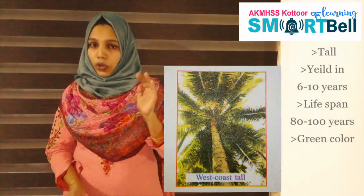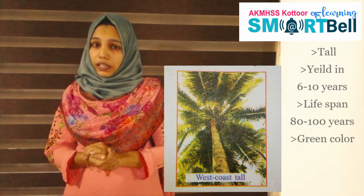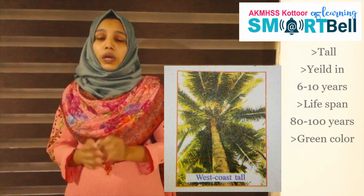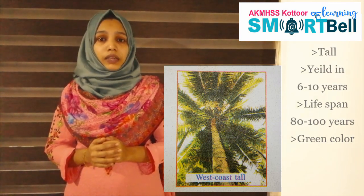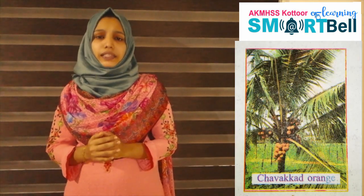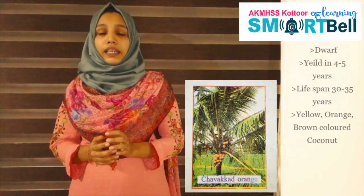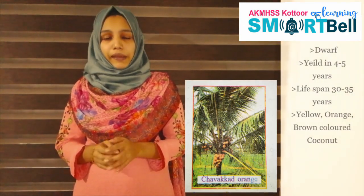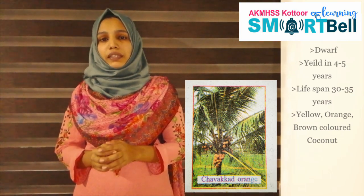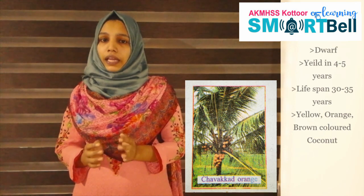In the first picture, its characteristics are: it is tall, its yielding period is 6 to 10 years, its lifespan is 80 to 100 years, and it is a green colored coconut. The second picture's characteristics are: it is dwarf, its yielding period is 4 to 5 years, its lifespan is 30 to 35 years, and it is a yellow, orange and brown colored coconut. When we compare these two varieties, we can understand that there are many advantages and disadvantages present.